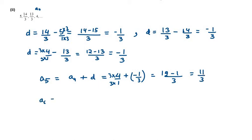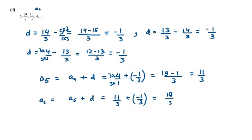Now we need to find A6. A6 will be A5 plus D. A5 is 11/3 and D is minus 1/3, so it will be 11 minus 1, which is 10/3.